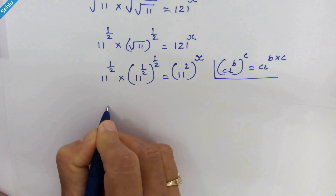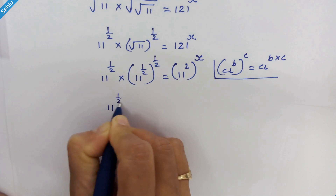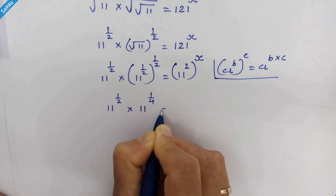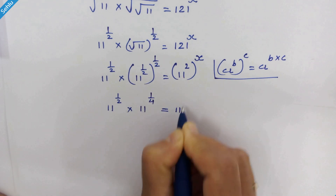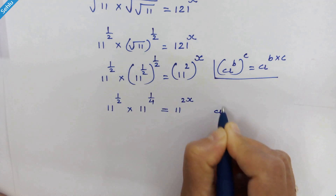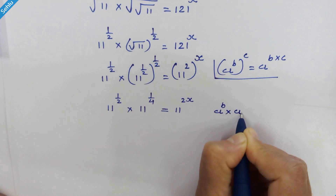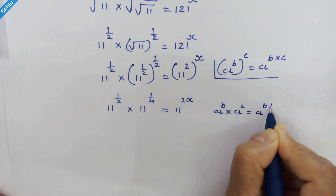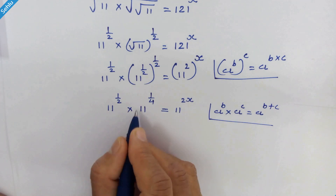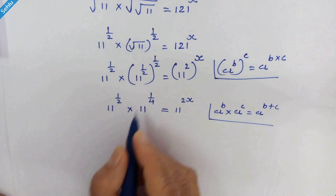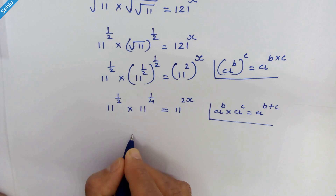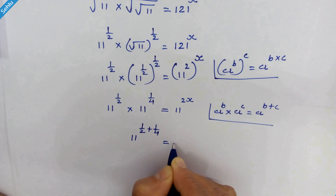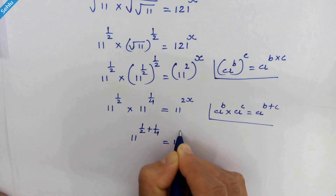So in the next step we have 11 raised to 1 upon 2 times 11 raised to 1 upon 4, equal to 11 raised to 2x. If we have a raised to b times a raised to c, then it will be a raised to b plus c. So here we have the same base, so we can add the exponents: 11 raised to 1 upon 2 plus 1 upon 4, is equal to 11 raised to 2x.